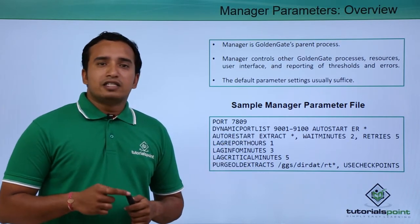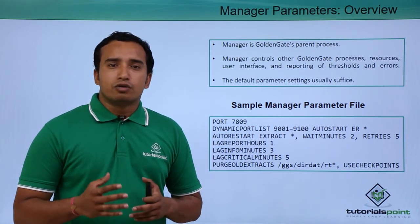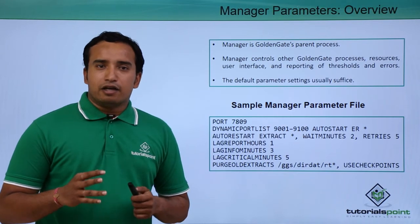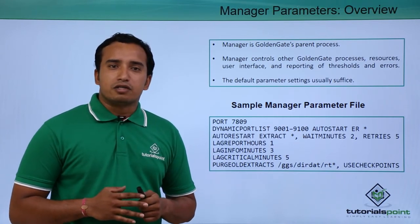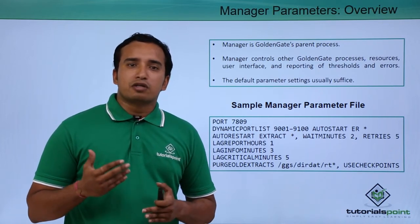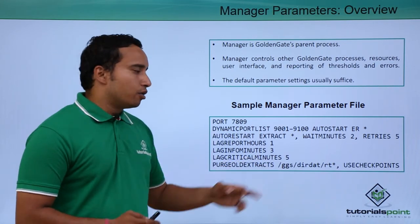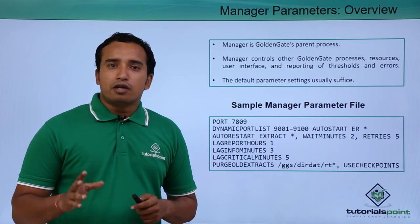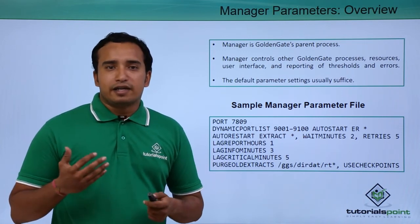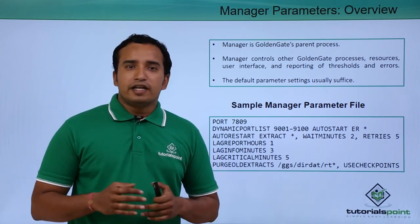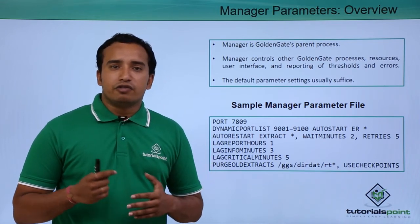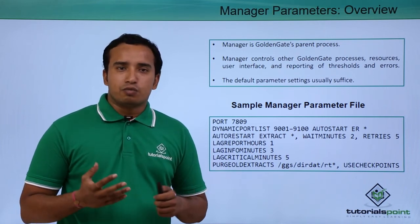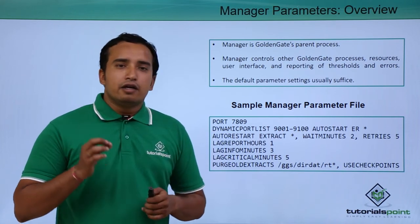Lag report hours: the manager process checks the extract process for any lag every one hour. Lag info minutes: if the lag is more than 3 minutes, the manager process writes an informational message to the error log. If the lag goes beyond 5 minutes — meaning the extract process is unable to extract data from the source database for more than 5 minutes — the manager process considers the alert critical and reports an error to the GoldenGate error log file.